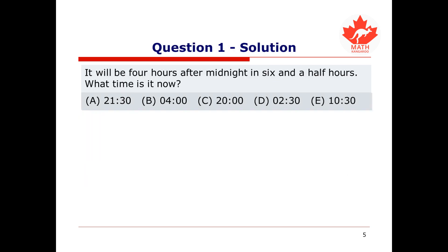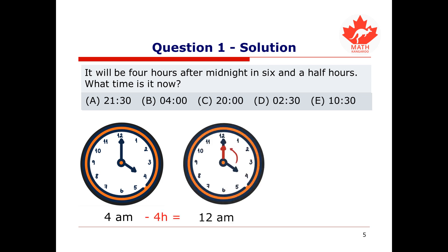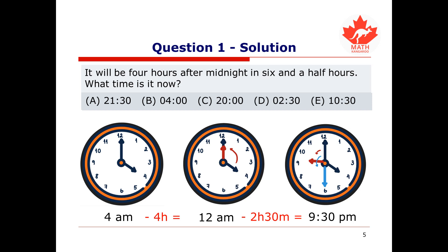To solve this problem, we can visualize it. Let's take the first part of the question: this is how 4 hours after midnight looks on the clock. The question says that it will be 4 a.m. in 6 and a half hours. Since going backwards 4 hours from 4 a.m. arrives at midnight, we only need to calculate 6 hours 30 minutes minus 4 hours, which is 2 hours and 30 minutes. Counting back 2 hours and a half from midnight gives 9:30 p.m., which in a 24-hour clock is 21:30. So our correct option is option A.